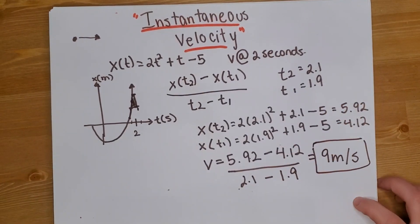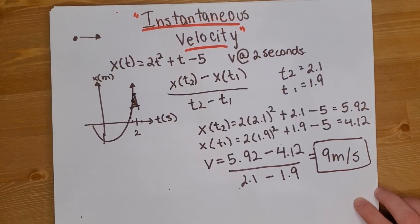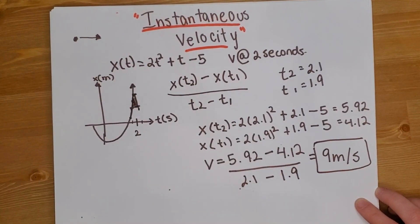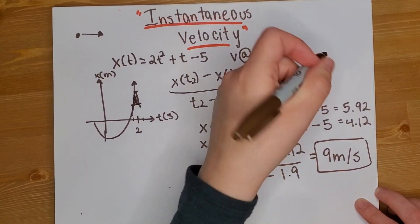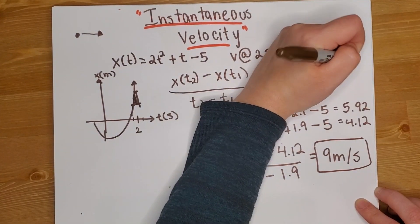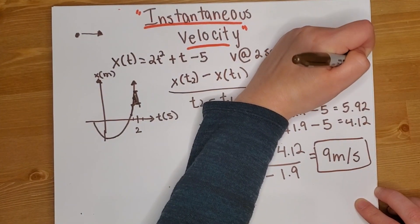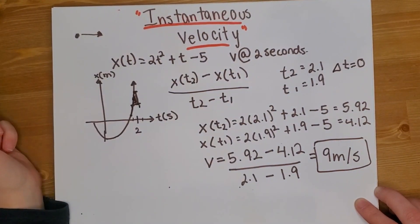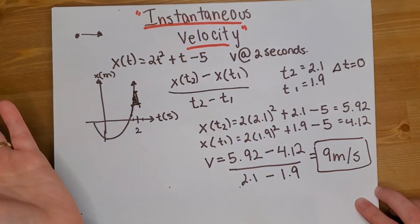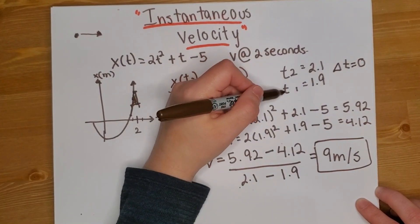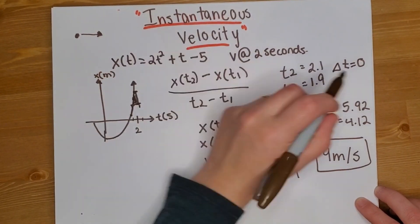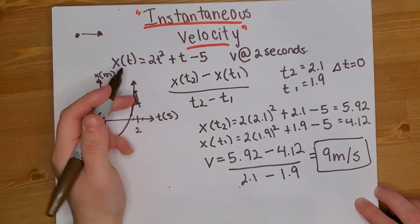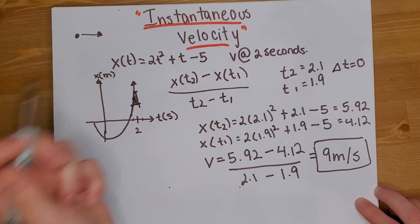Now I'm just going to mention again, that's the average velocity between 1.9 and 2.1. However, the smaller that difference is, so let's say the change in t, if it approximates to zero, or let's say it's zero, then you get instantaneous velocity. The change of t here is actually 0.2 seconds. That's the difference between t₁ and t₂. So how about we actually get it equal to zero, so we can get exactly what the slope is at that point or the instantaneous velocity.